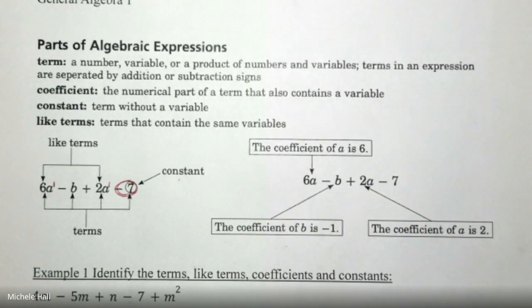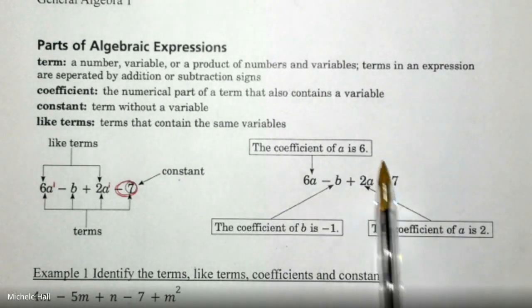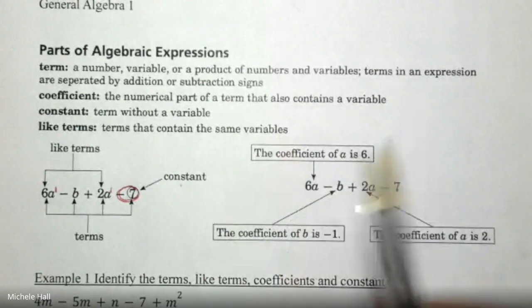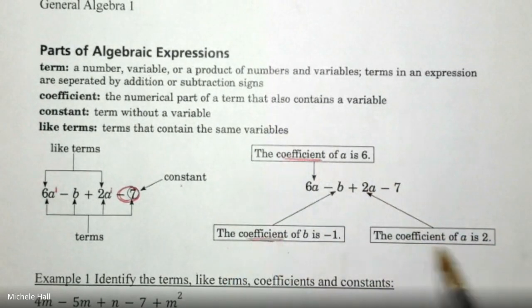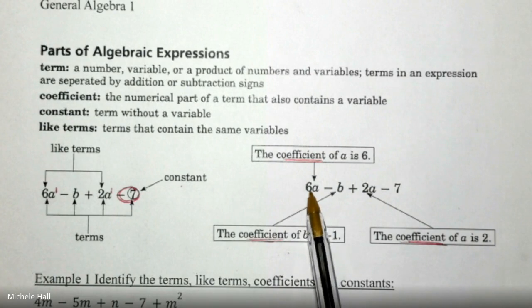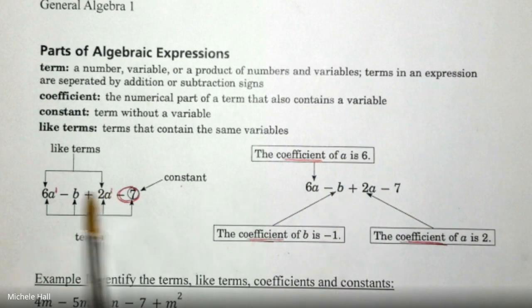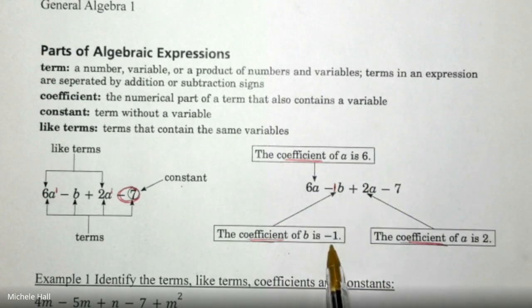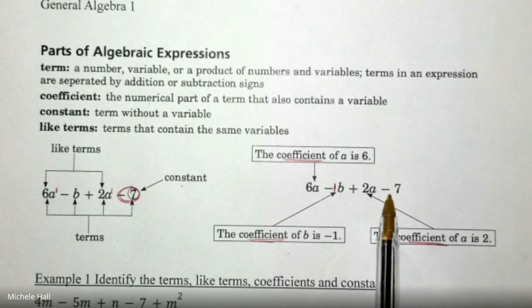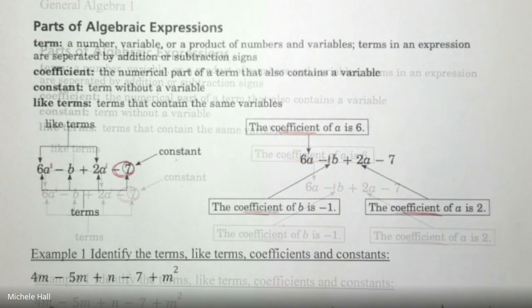There are some other definitions that we have. And so if you copy down that expression again, we can talk about some other things about this expression. We like to talk about the coefficient. The coefficient is the number that's in front of the variable. And so here's my variable a. 6 is the coefficient. Here is negative b. Remember that just like exponents, if it's not there, we can write the 1 down for the exponent, then it would be true for the coefficient as well. There is a negative 1 that is understood to be there. So the coefficient of b would be negative 1. The coefficient of 2a would be 2. Negative 7 does not have a coefficient because it doesn't have a variable. This is the constant.